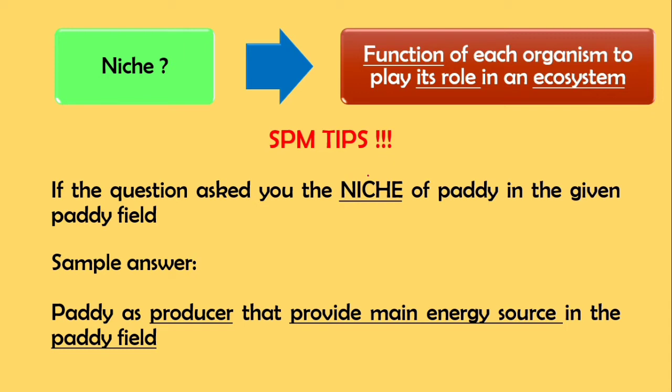If the question asks you the niche of paddy in the given paddy field, how to explain in order to get full marks? Bear in mind your answer need to have terms functions, its rules, and what types of ecosystem. Paddy function as producer, provide main energy source in an ecosystem, paddy fields. This is to get full marks.